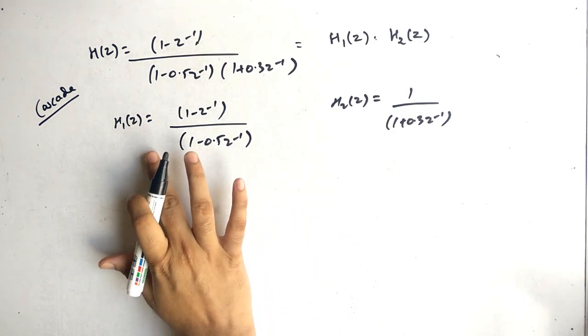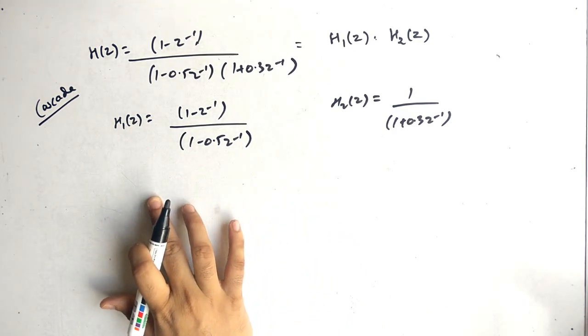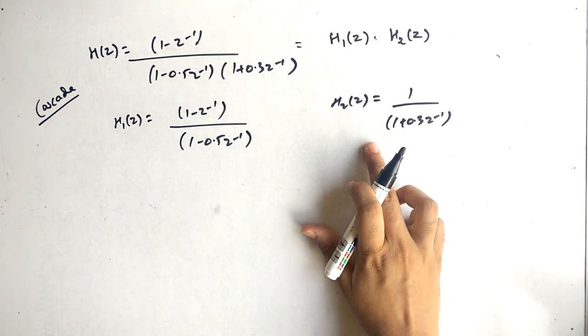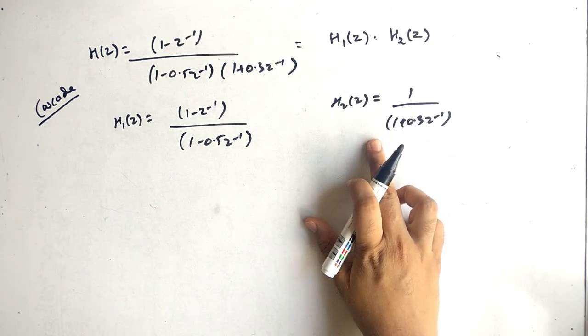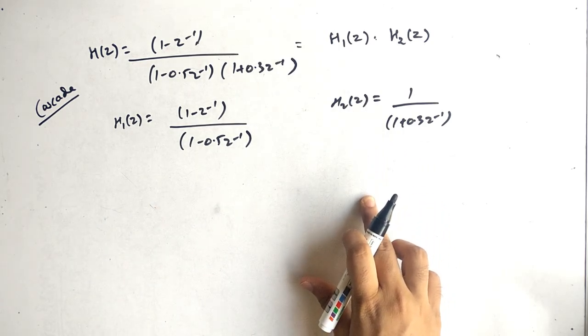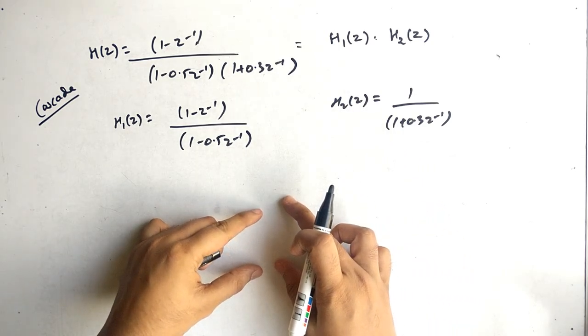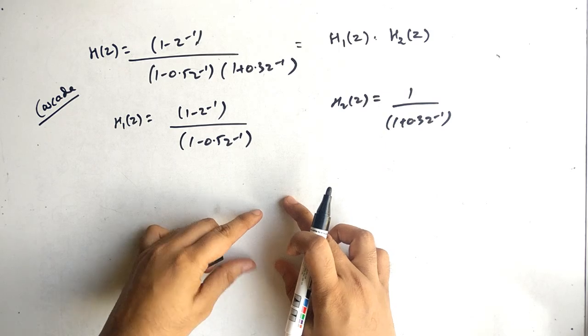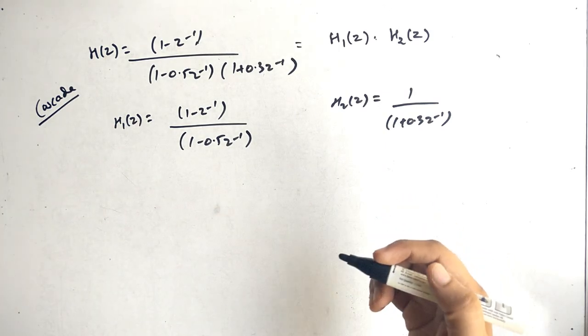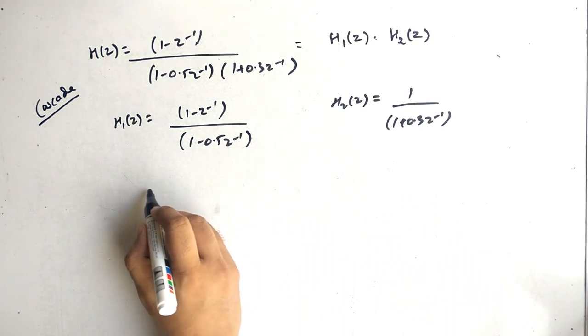For cascade realization: first, plot the direct form 2 of H1 of Z, then the direct form 2 of H2 of Z, then multiply both of them together to get the answer.